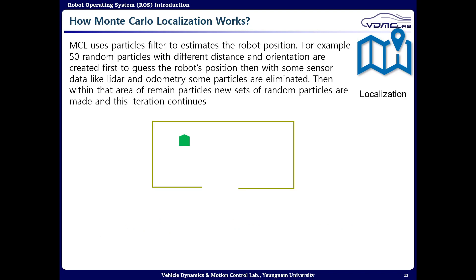Monte Carlo localization is a particle filter-based localization method. Assume an environment where you have four corners and open space which can be considered as a pretty featureless area. First we are going to distribute 50 particles in random positions and directions. Now our LIDAR sensor can sense a straight path which has a fixed distance from the robot.